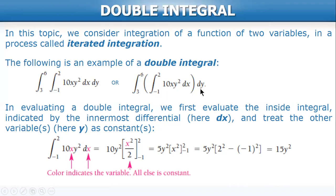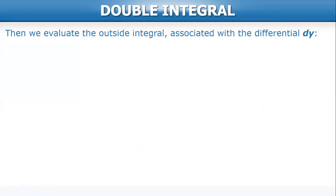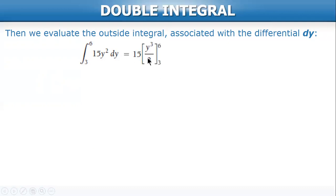After this, we substitute 15y² and evaluate the outside integral. Next we evaluate the outside integral associated with the differential dy. Note that 15y² is the result of the inside integral. We integrate 15y² dy, giving 15 over 3, which is 5y³, from 3 to 6. We substitute the limits and the answer is 945.